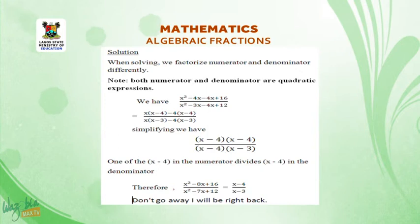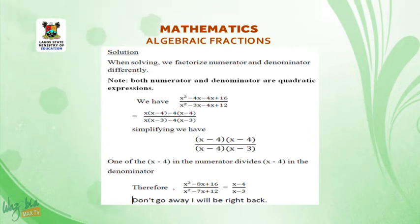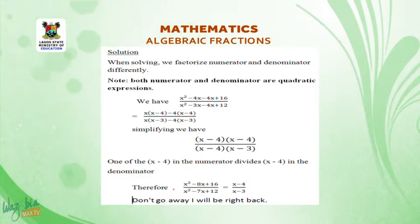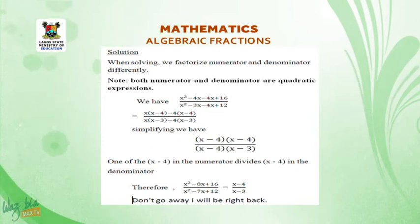One of the (x minus 4) factors in the numerator divides the (x minus 4) in the denominator. Therefore, x squared minus 8x plus 16 all over x squared minus 7x plus 12 equals x minus 4 all over x minus 3.